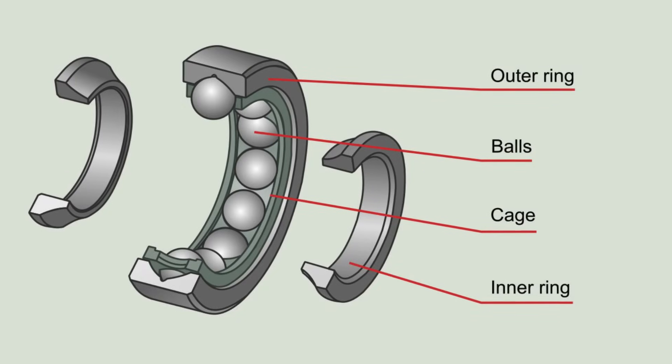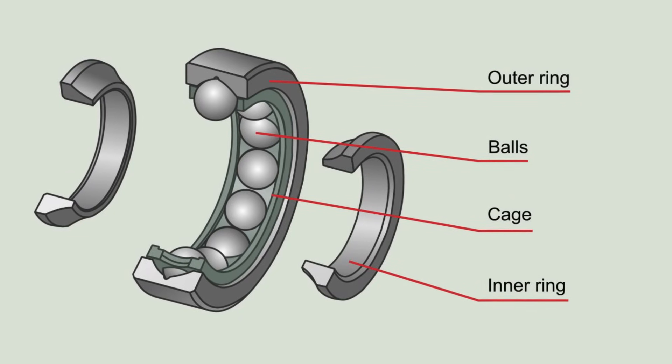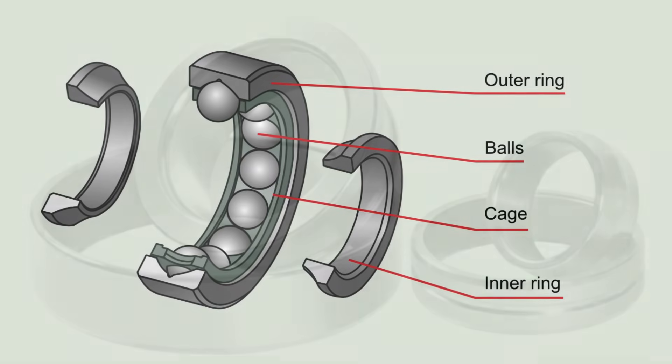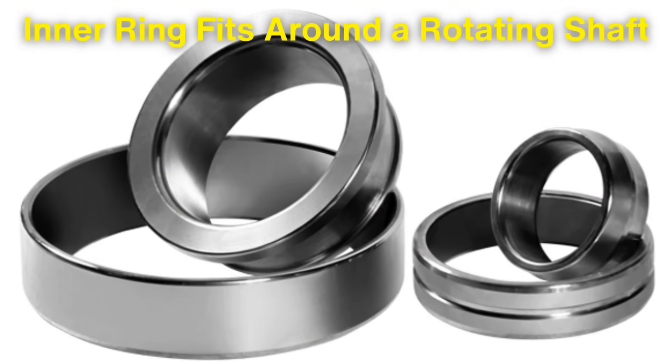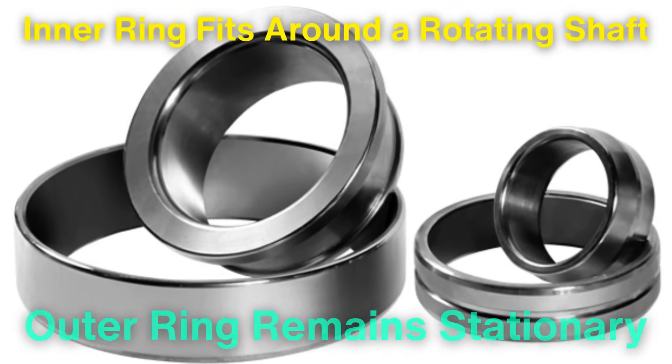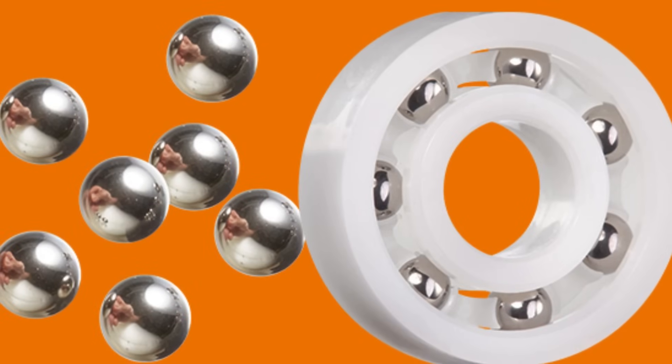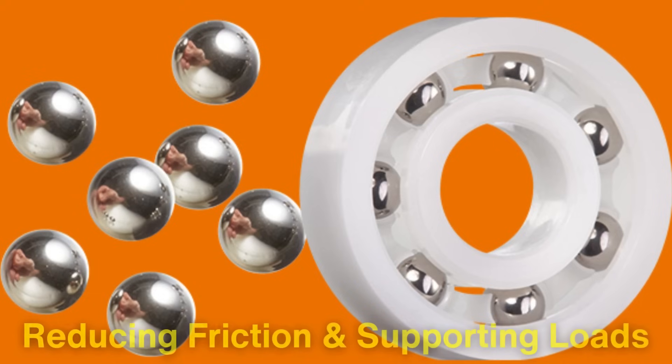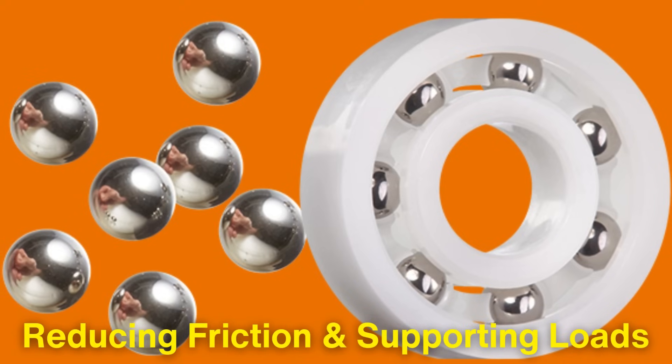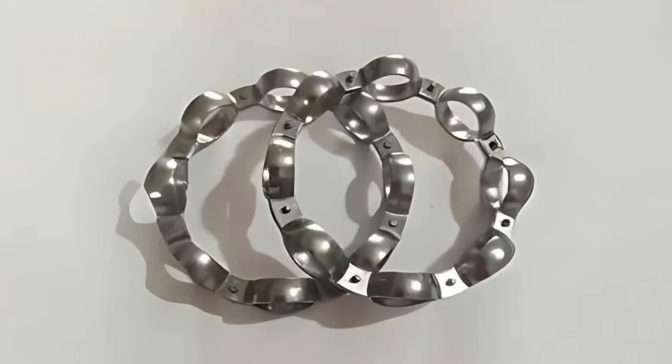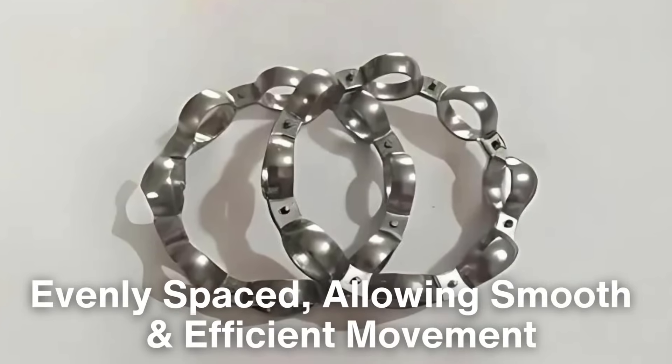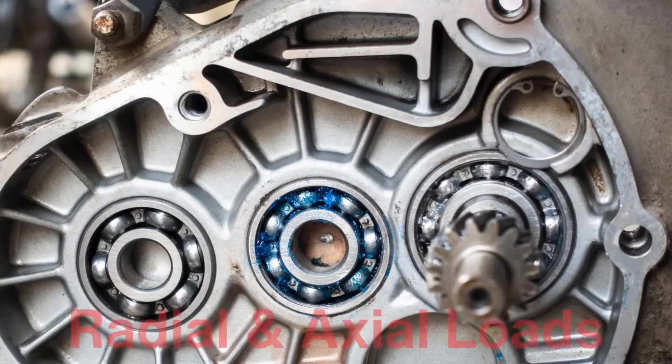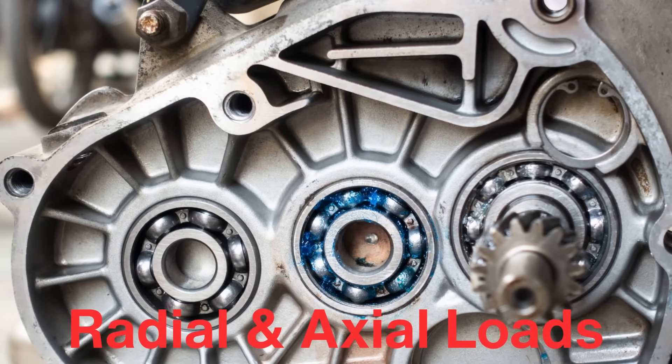A ball bearing consists of four primary components: the inner ring, the outer ring, the balls, and the cage or separator. The inner ring fits around a rotating shaft and moves with it, while the outer ring remains stationary. The balls sit between the inner and outer rings and roll in specially designed grooves, reducing friction and supporting loads. The separator holds the balls in place, ensuring that they're evenly spaced, allowing smooth and efficient movement. Ball bearings can handle both radial and axial loads, making them incredibly versatile.